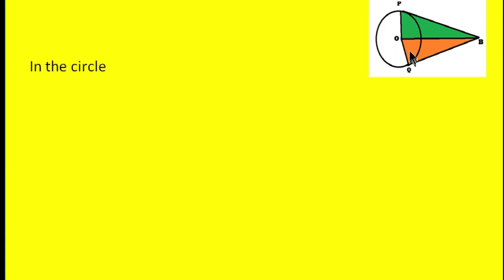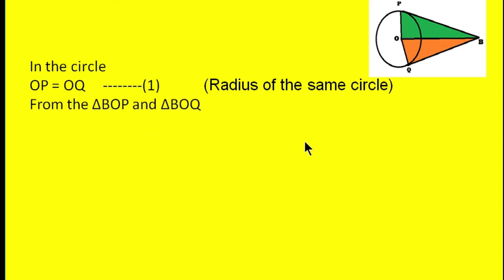In the circle centered at O, we can have OP equal to OQ. Why? Radius of the same circle. As we know, the radii of the same circle are equal in length. That is why OP equals OQ. I give it as number one. Then from the triangles BOP and BOQ, we will compare these two triangles.